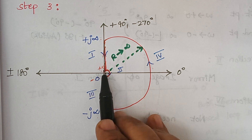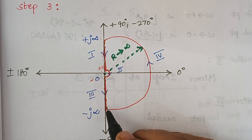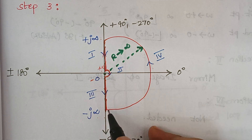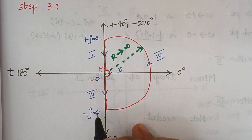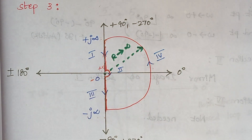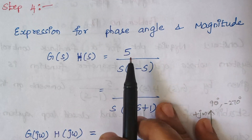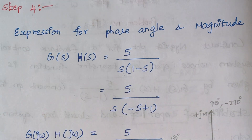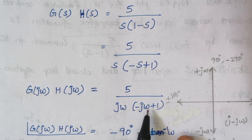Section 2 starts at plus 0 and ends at minus 0. Section 3 starts at minus 0 and ends at minus infinity. Section 4 starts at minus infinity and ends at plus infinity. Now we write the expression for phase angle and magnitude by replacing s with j omega.